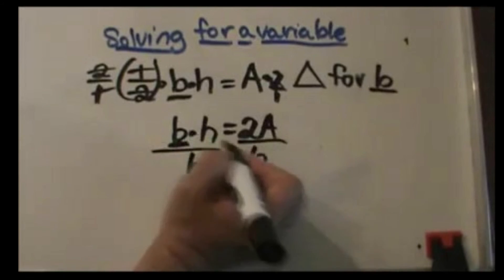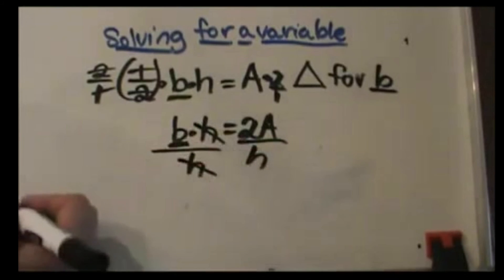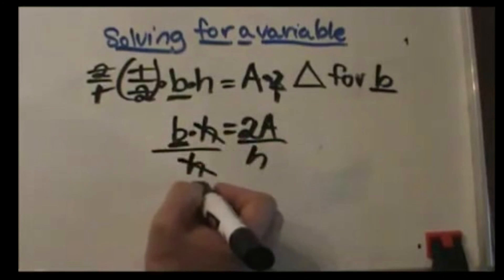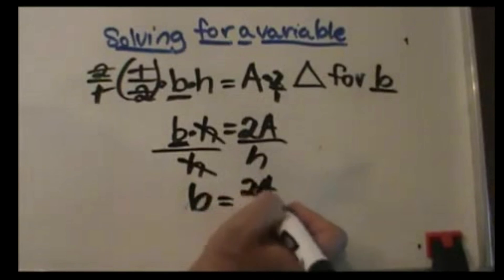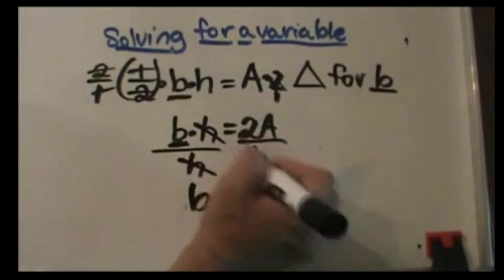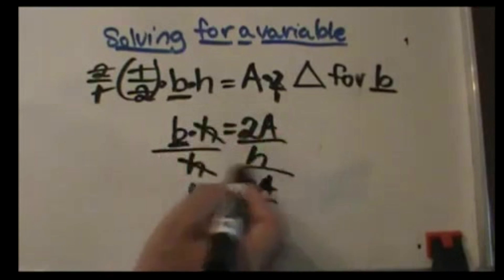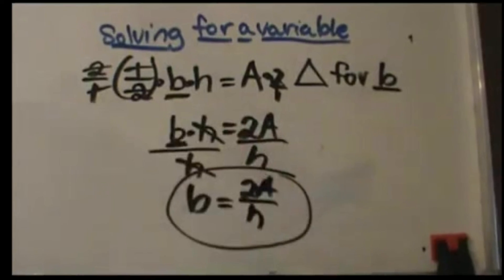So divide both sides by h, and now we have the b by itself. So b is equal to 2A over h. So all I did was bring that down just to clean it up, and there's your solution.